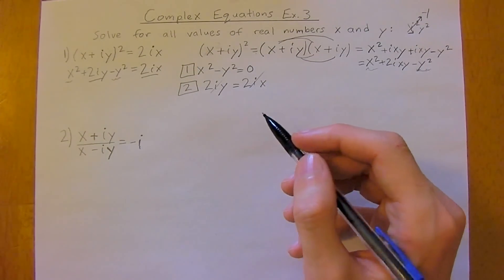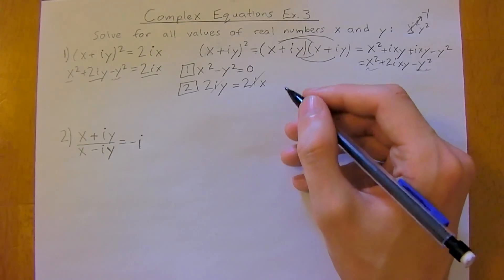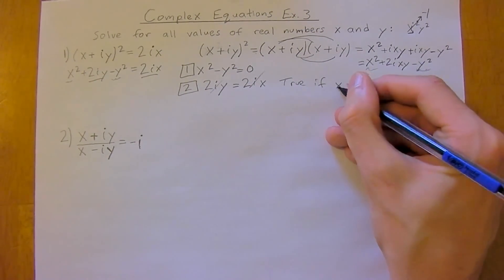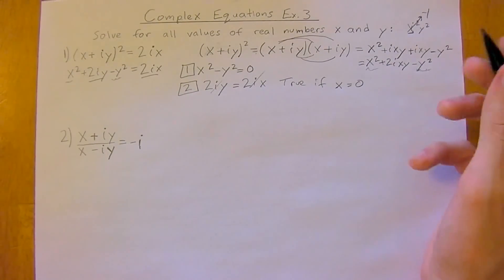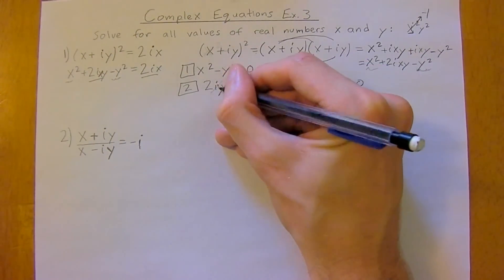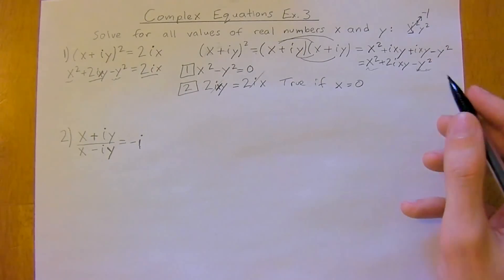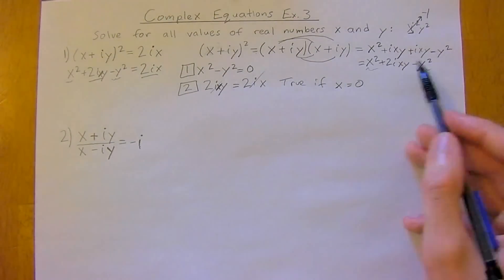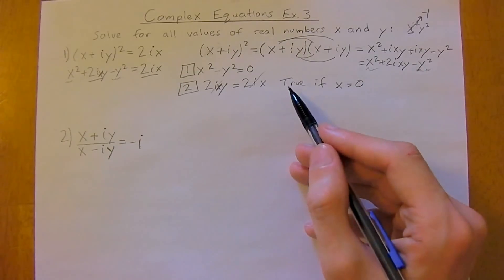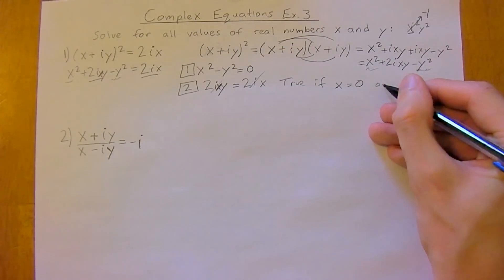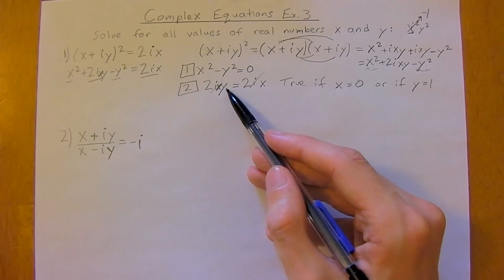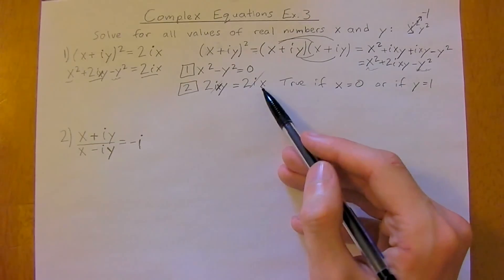Now that we have it in this set form, we can see that the second equation is true if X equals 0. Actually, I missed an X here — there should be an X here. It should be 2IXY and 2IXY. The second equation is true if X equals 0, or if Y equals 1.